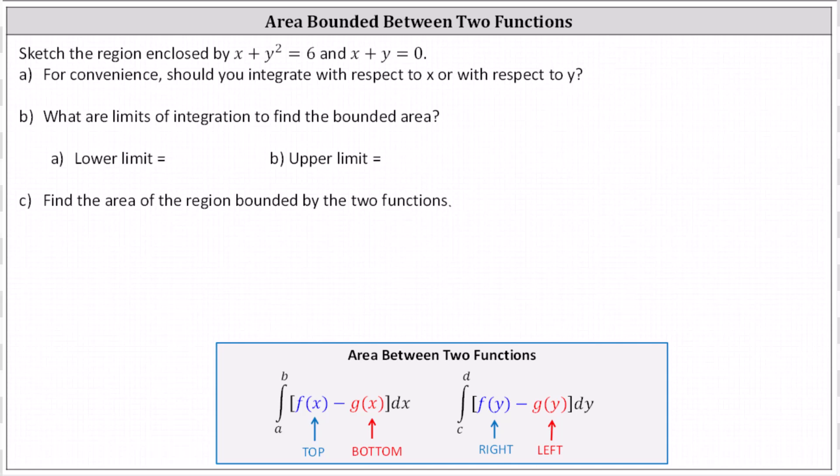Sketch the region enclosed by x plus y squared equals six, and x plus y equals zero. Part A: for convenience, should you integrate with respect to x or y? Part B: determine the limits of integration. Part C: find the area of the region bounded by the two functions.